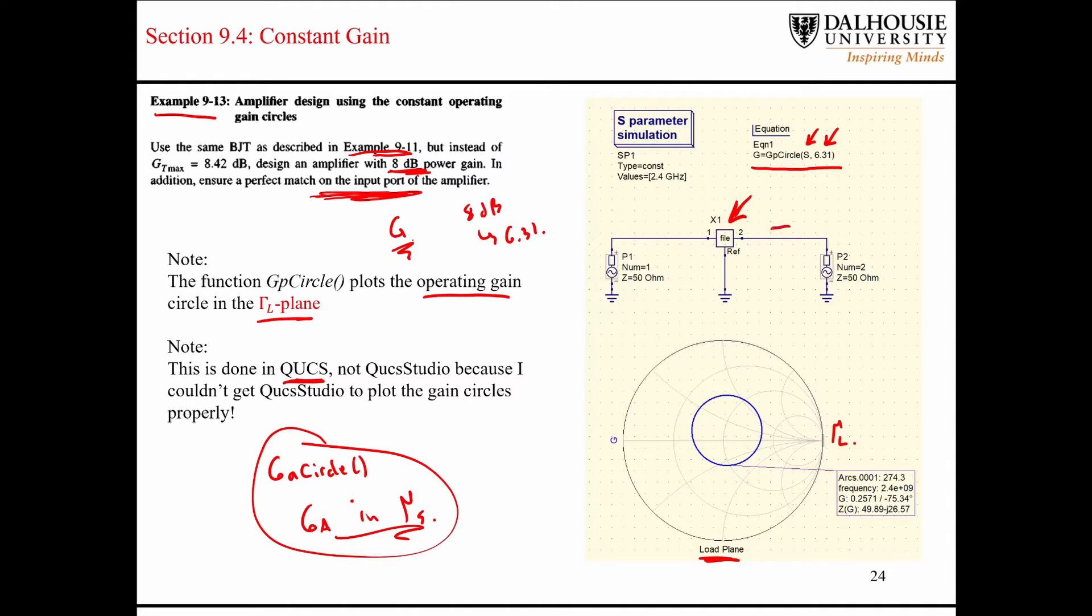So, what we're trying to do here is we are trying to design an output matching network that has a load reflection coefficient that lies somewhere on this circle. So the book selects this value here, because if we have a 50-ohm load, then this would be a very simple output matching network comprised of just a simple series capacitor. So, hopefully you can see that there. And you remember that from all of our classes and work on matching network design.